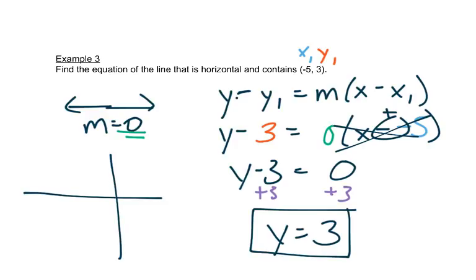If you think about how we would graph that, it would be negative 5, 3, straight across, crosses the y-axis at 3, so it's y equals 3.